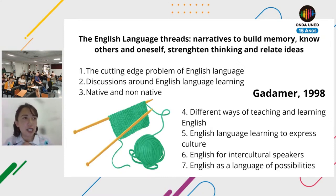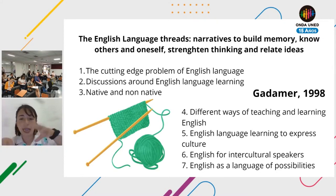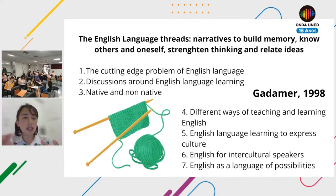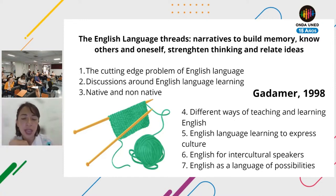Number four covers different ways of teaching and learning English — approaches to teaching, what's best, and the combination of approaches, which is completely valid. Number five has to do with how culture is always in the language, and how when we study a language we have to study its culture, and vice versa.